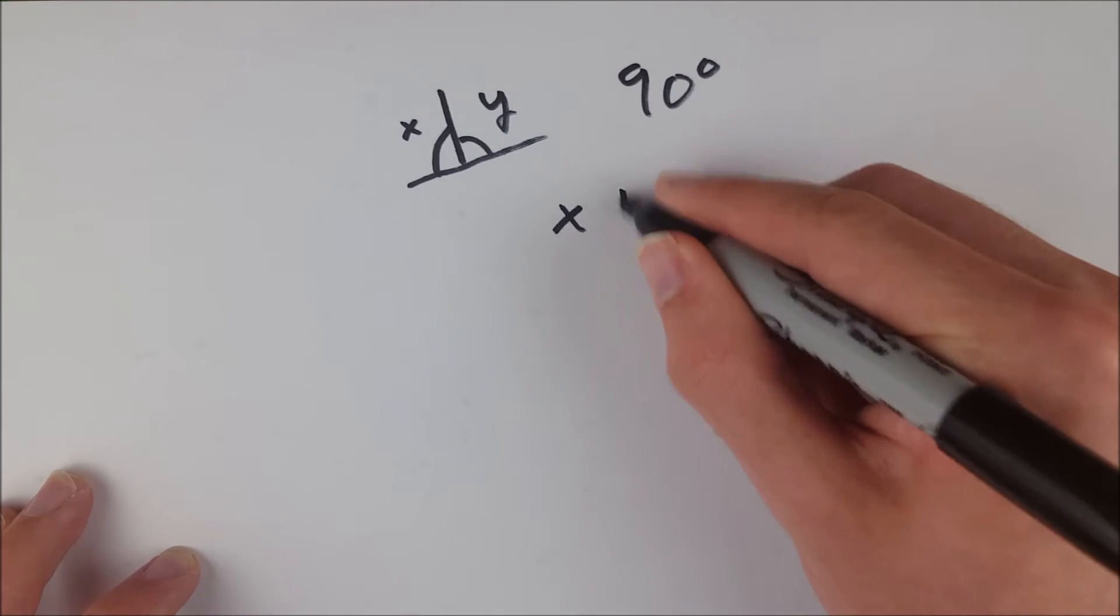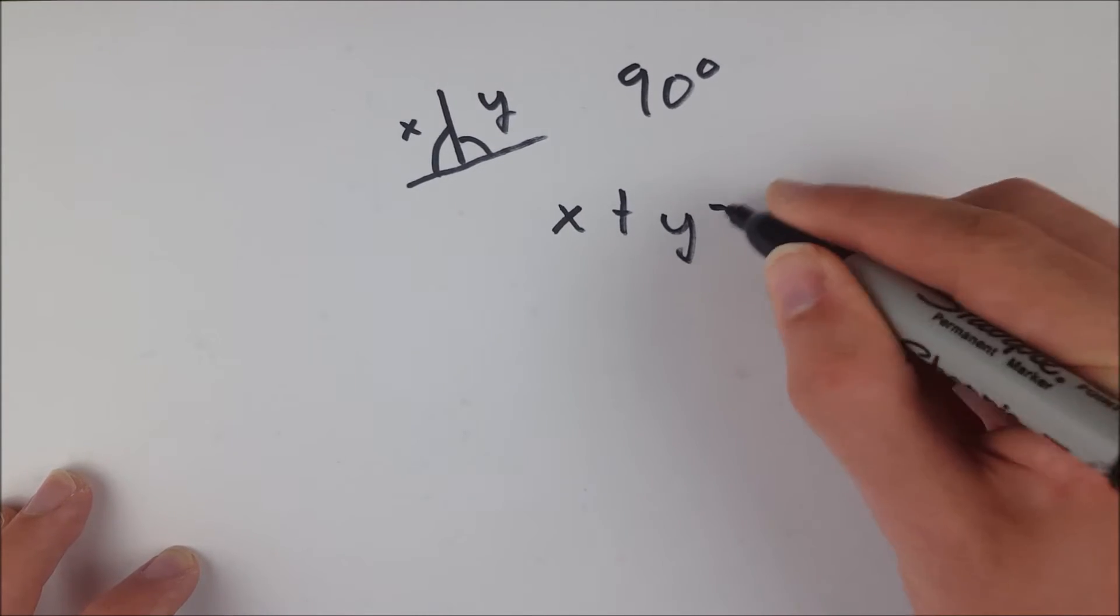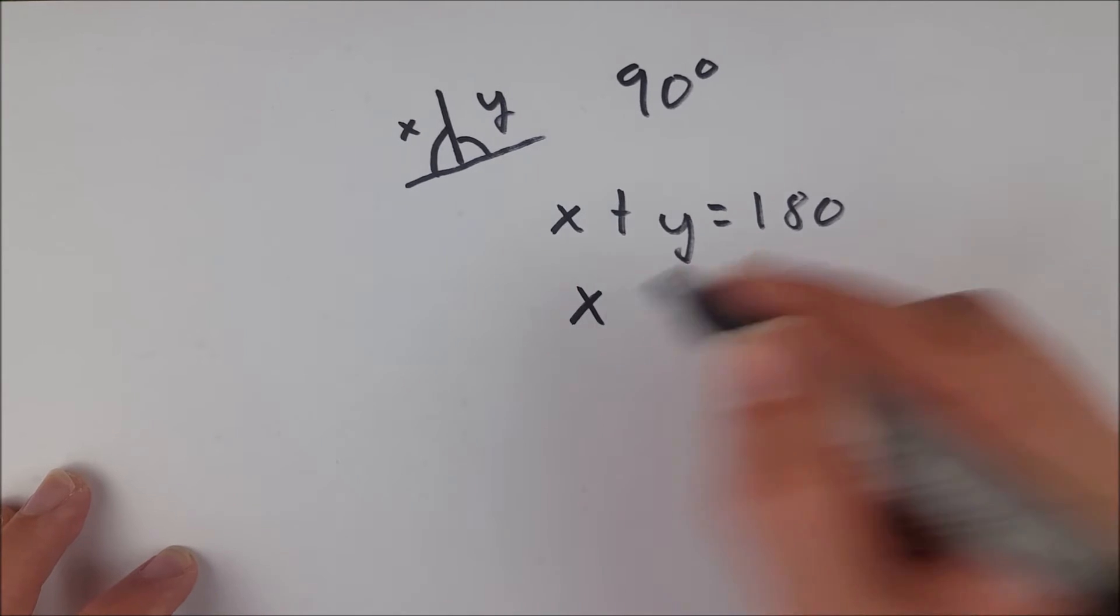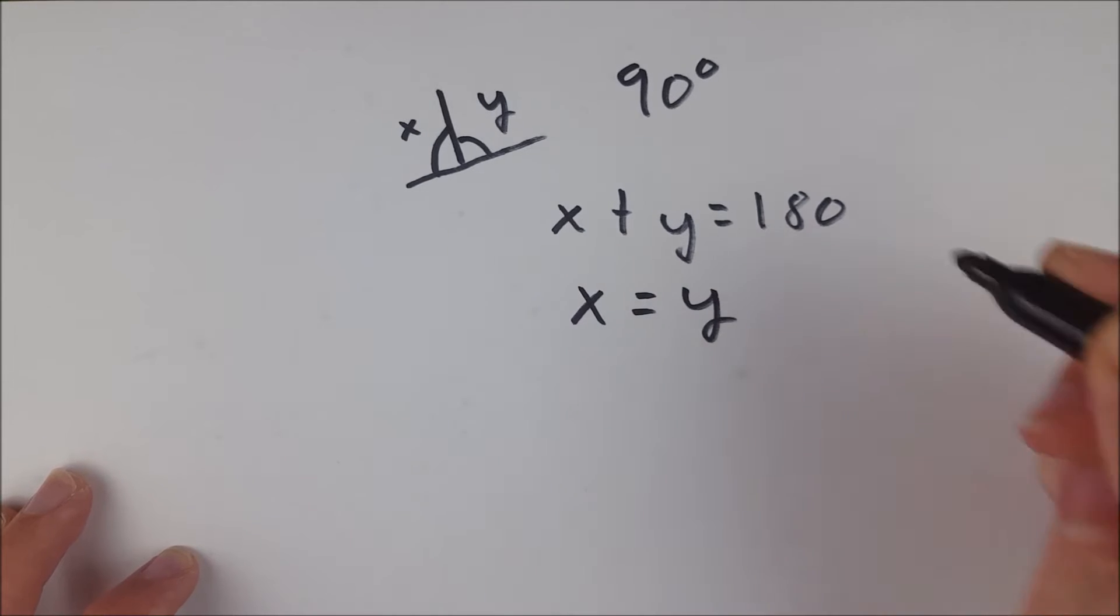So they're supplementary is the first thing we're assuming. So x plus y equals 180. And then we also know that x equals y, because we're supposing that they're congruent.